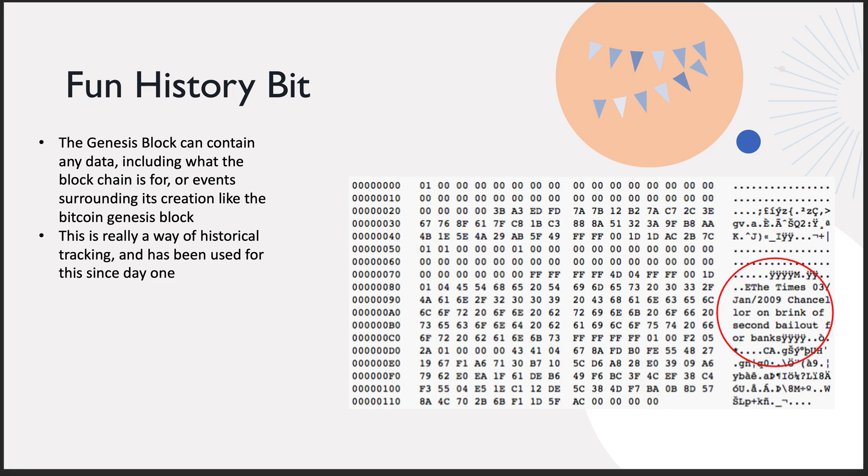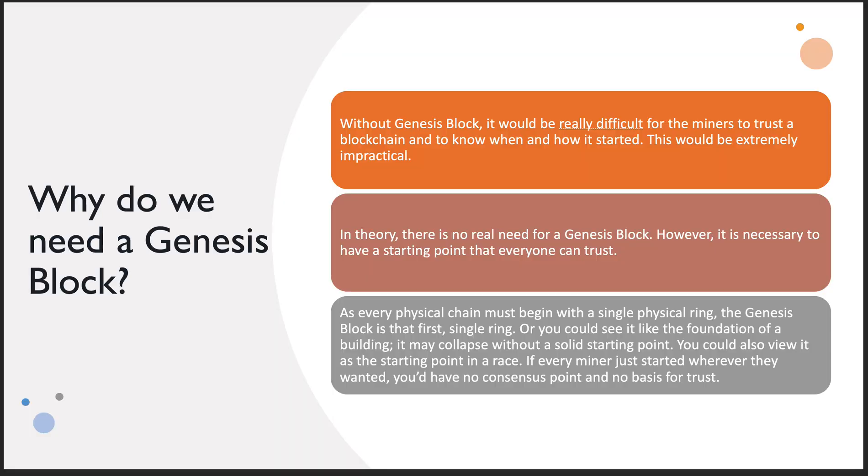That's important — especially if you're going to be doing something like voting or a student transaction record. I could have my own educational transaction blockchain for all the education I have, or all the videos I've watched, or things I've done to improve myself. This is a good and interesting way of having historical tracking from day one. It doesn't just need to be Bitcoin — it can be anything that has a sequential history worthy of being in a blockchain. The Genesis block is really the keystone of all this.